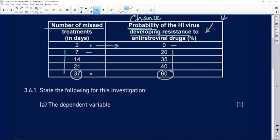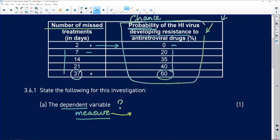State the dependent variable in this investigation. Remember, the dependent variable is the one that you're going to measure. You start off the investigation not knowing what your answer or your measurement is going to be. And so before we started this investigation, we didn't know what the probabilities or the chances of developing resistance could be. They might have been zero all the way, showing us that there's no correlation between missing doses and HIV resistance to the antiretrovirals.